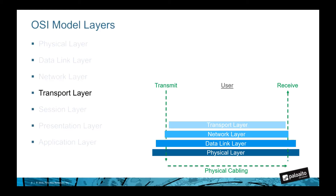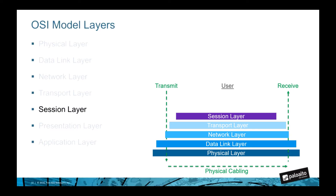The transport layer, or layer four, is responsible for delivering data across the network. TCP and UDP are the most common examples of layer four technologies. Layer four packets are bundled into segments for TCP or datagrams for UDP. This allows for reliable transmission of data between points on a network. The transport layer is sort of the post office of the OSI model, providing acknowledged delivery like certified mail for TCP, or unacknowledged delivery like regular mail for UDP.